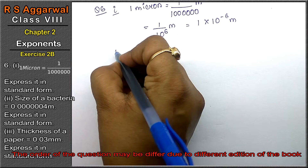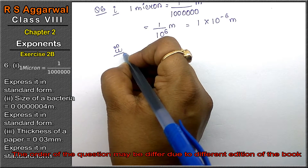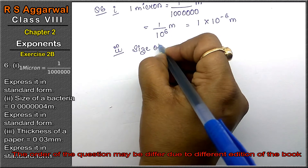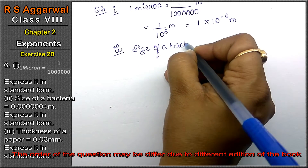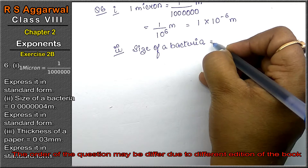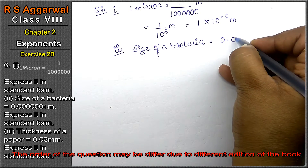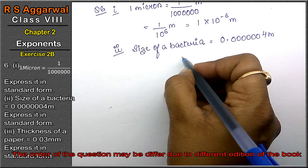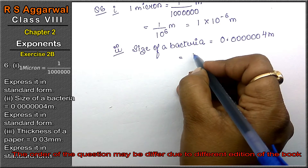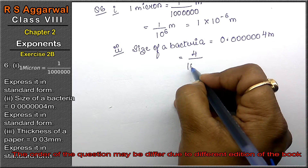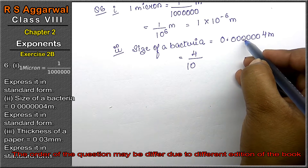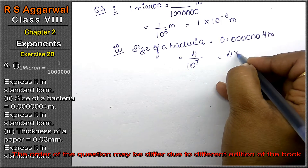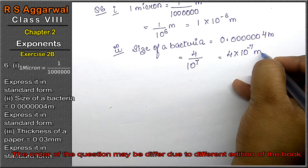Let's do the second part. Size of a bacteria equals 0.0000001 — that is, 0 point followed by six zeros then 4 — meters. Express it in standard form. We move the decimal point, so we write 4 upon 10 to the power 7, or 4 × 10⁻⁷ meters. That is the answer.